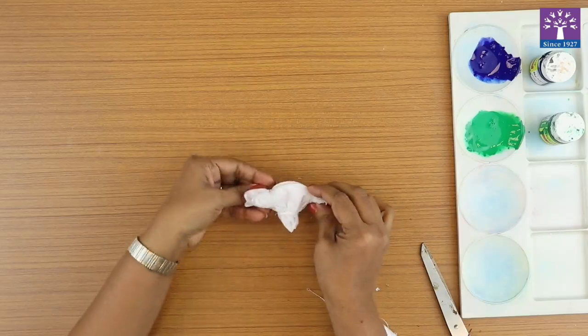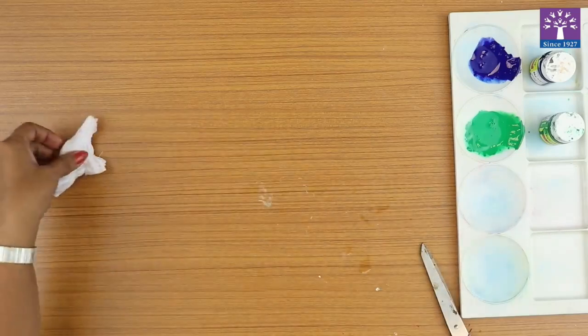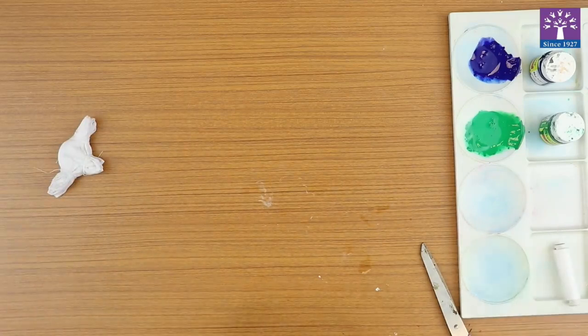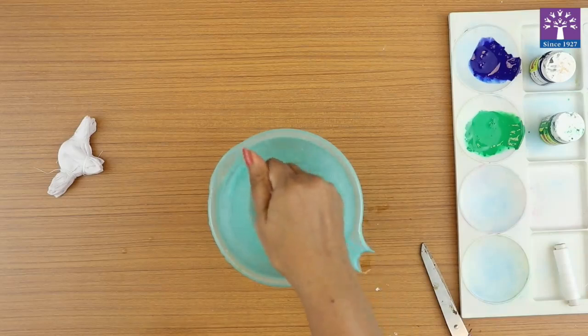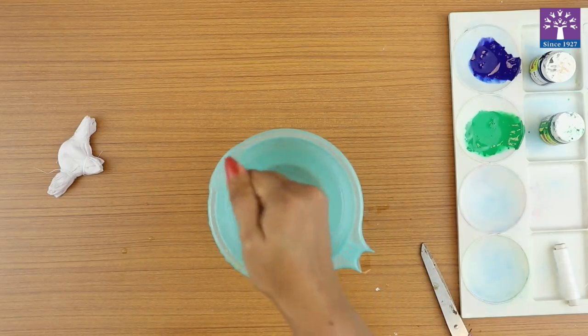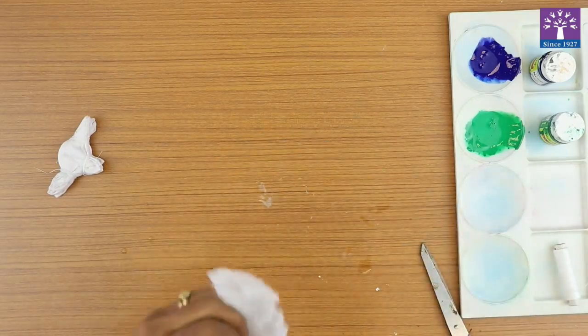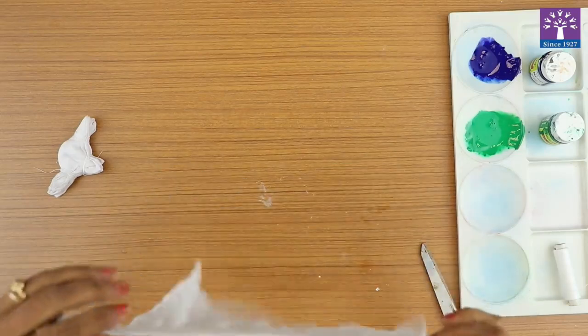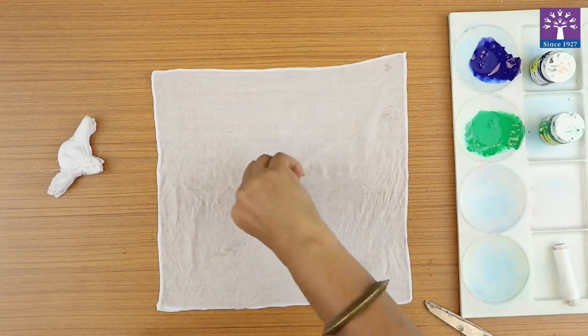So after tying with the thread, it will look something like this. Set it aside on a dry piece of paper. Now for the second fold, follow the same technique. Wet your cloth and squeeze all the extra water out. Your cloth should not be dripping wet but it should be damp. Pinch in the center.